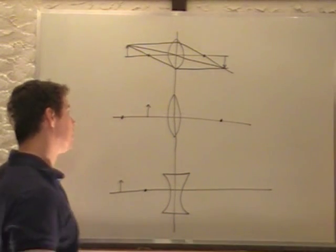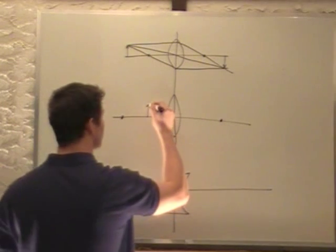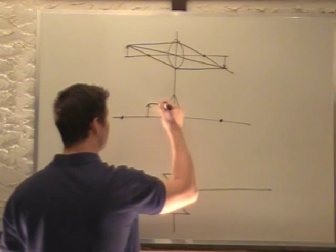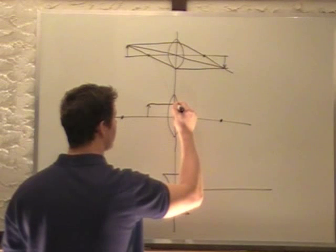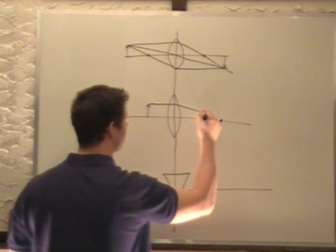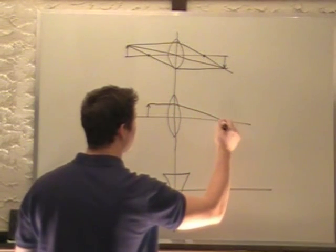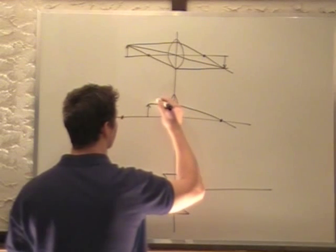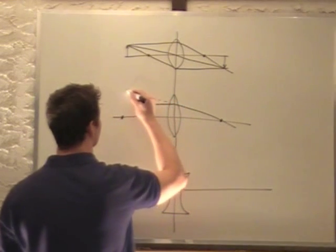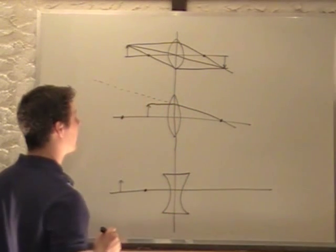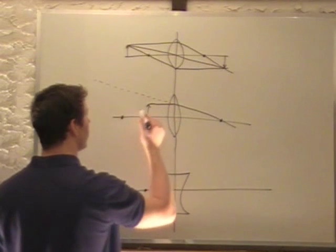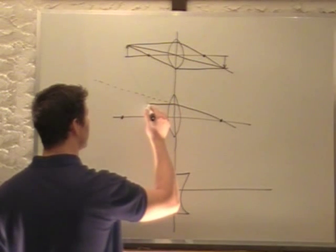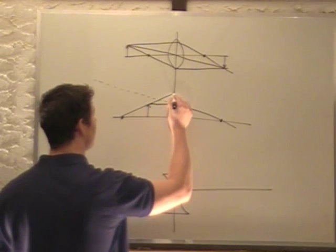This one is a little trickier. We start off again parallel to the axis, and it goes through the far focal point. We're also going to extend this back. Next, we go through the near focal point — the one on the same side.